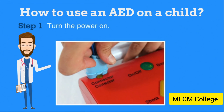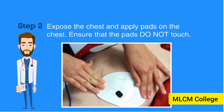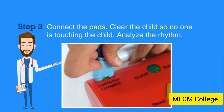How to use an AED on a child. Step 1: Turn the power on. Step 2: Expose the chest and apply pads on the chest. Ensure that the pads do not touch. Step 3: Connect the pads. Clear the child so no one is touching the child. Analyze the rhythm.